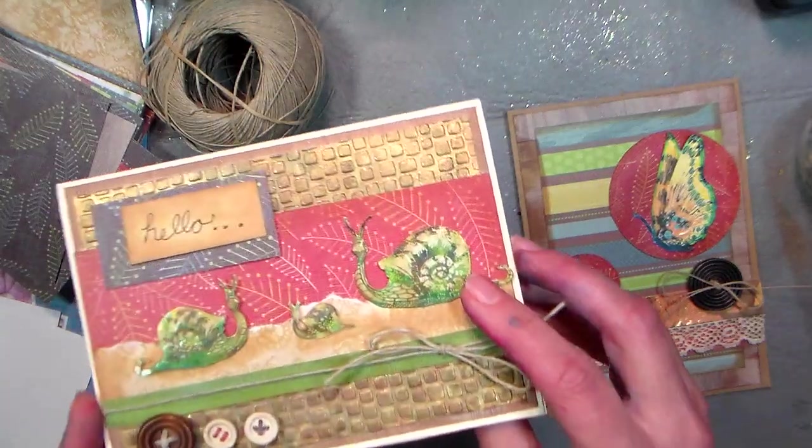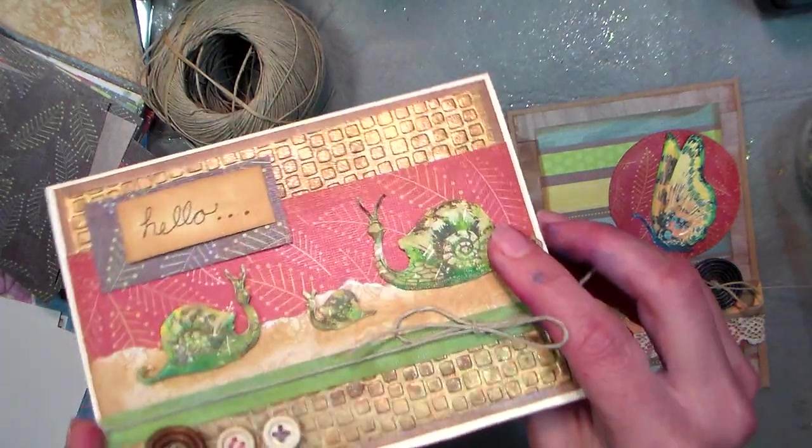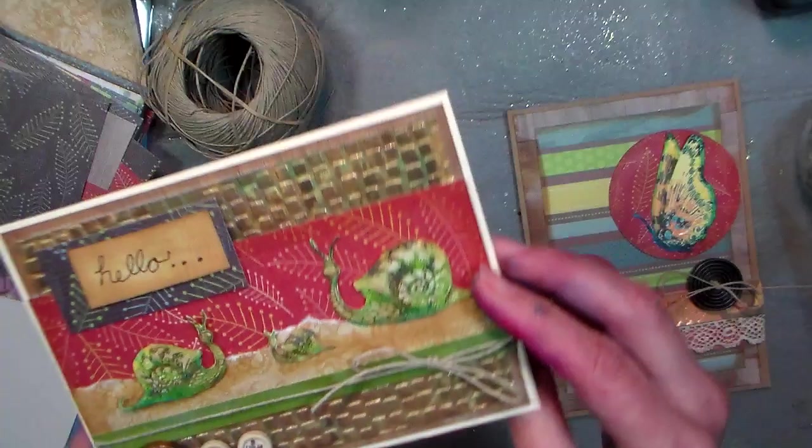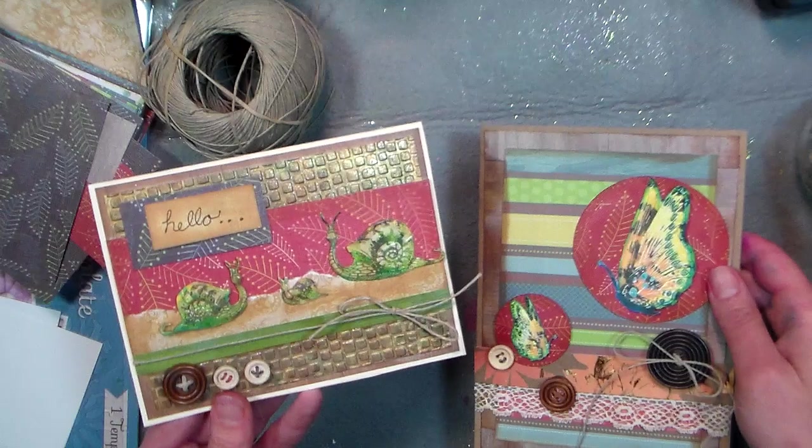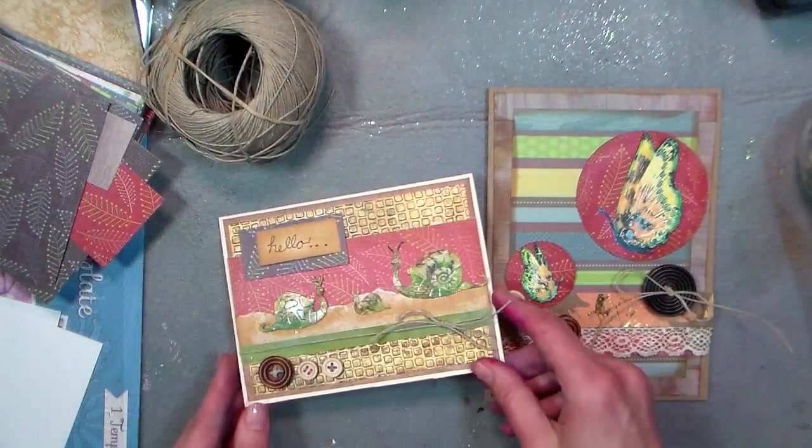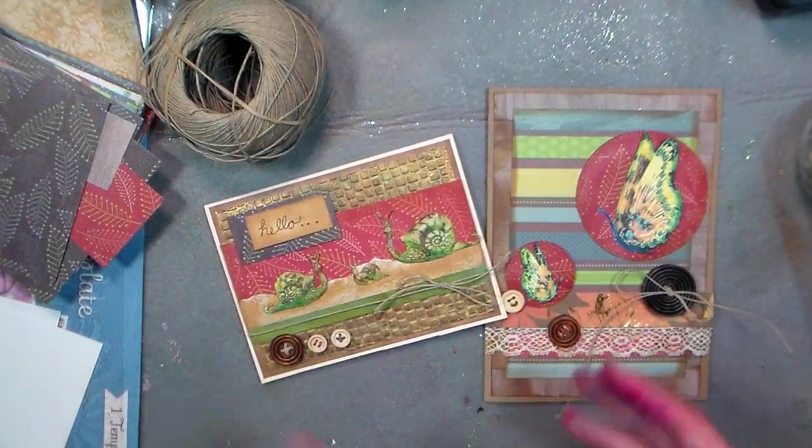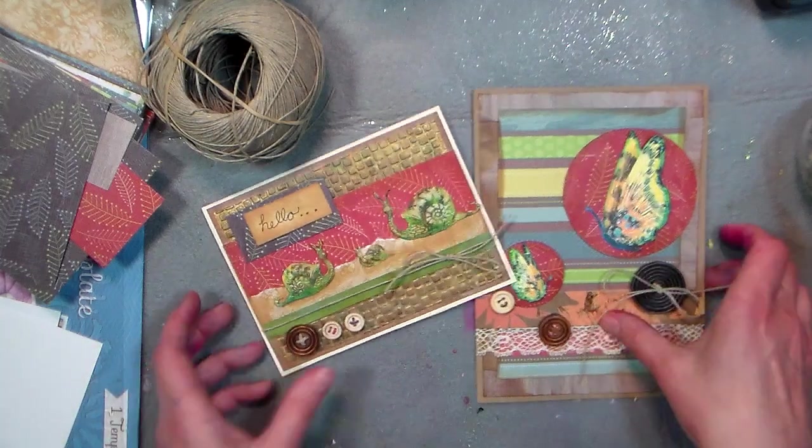Alright, first thing I'm going to do is show you how to do these images here and if you notice they have a little bit of embossing to them. Now there are dies out there that will die cut and emboss your images and they're really expensive. I thought I've got thousands of stamps, how could I get that look with the stamps I already have? Well I'm going to show you.